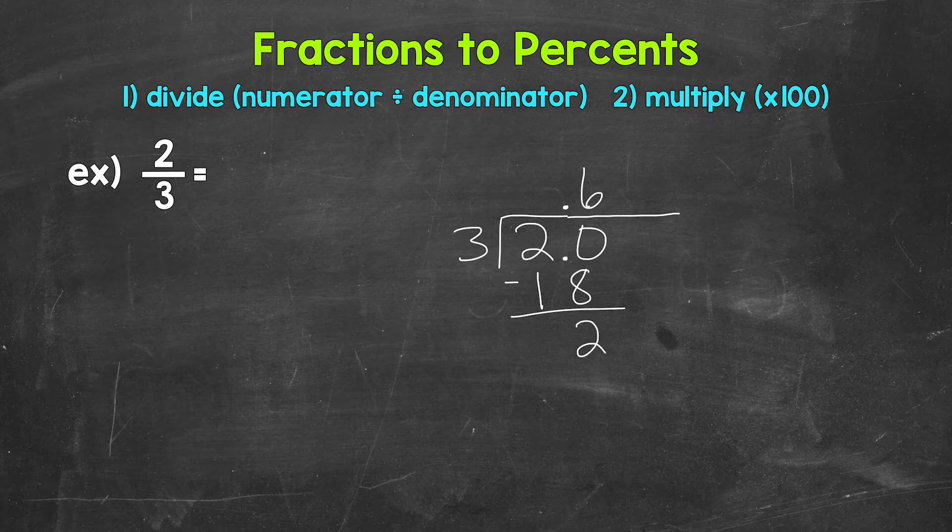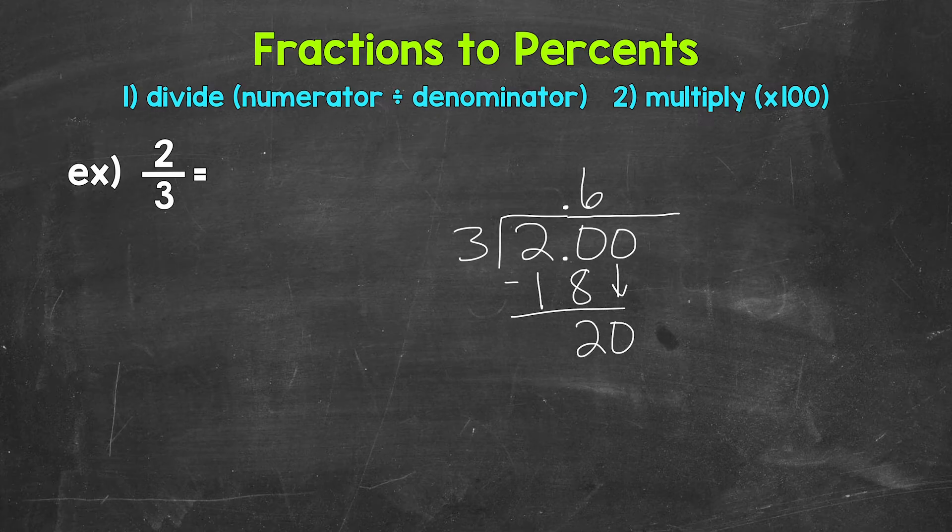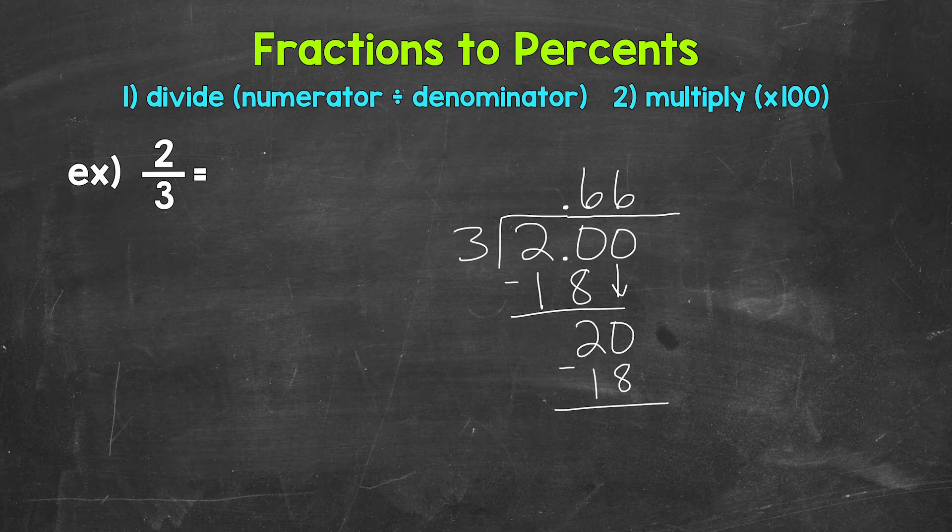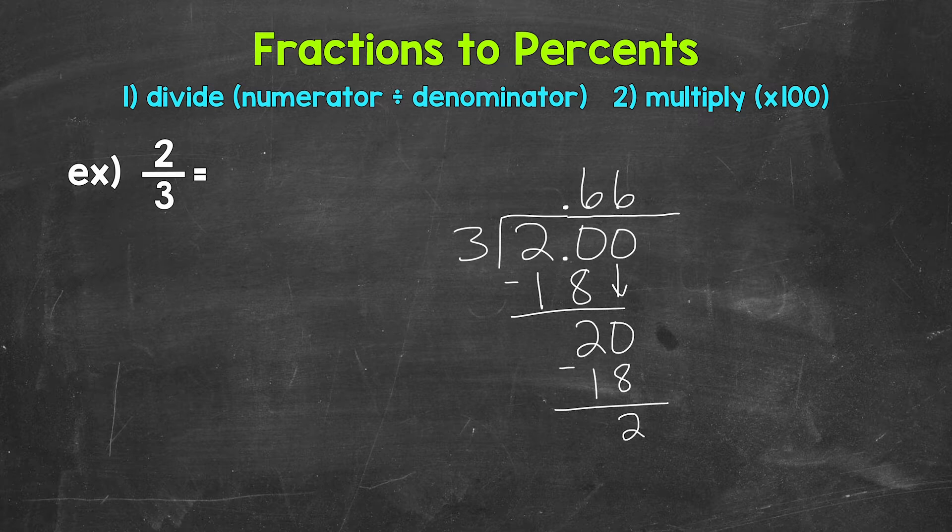So we don't have a clean zero at the bottom, so we can continue on by using another zero that we can bring down. Now we have 20 again, so 20 divided by three, which is six. Now we multiply six times three is 18, subtract 20 minus 18 is two.